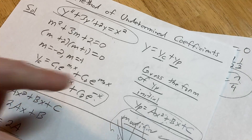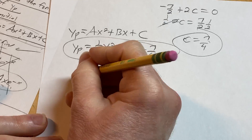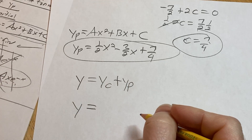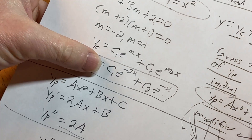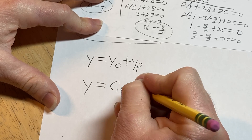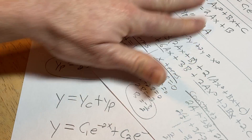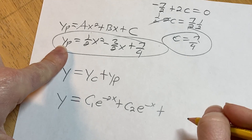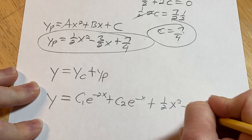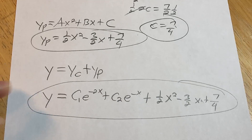The particular solution is y sub p equals (1/2)x squared minus (3/2)x plus 7/4. The final solution is y equals y sub c plus y sub p, which is c1 e to the negative 2x plus c2 e to the negative x plus (1/2)x squared minus (3/2)x plus 7/4.